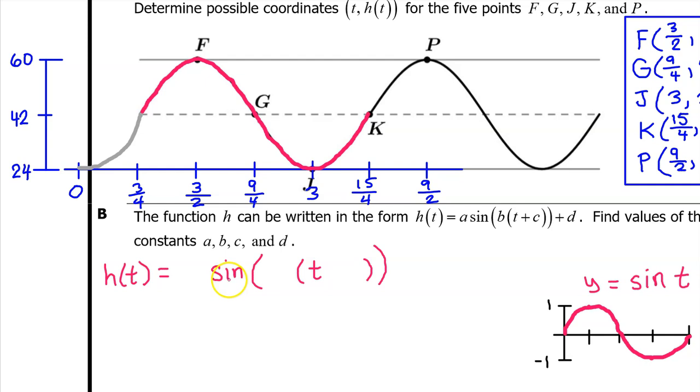Let's build an expression for h of t filling in the values of a, b, c, and d as we go. The a value reflects the amplitude of the graph. It's the distance between the midline and the highest value on the graph. On our graph of h of t, the amplitude is 18, 60 minus 42. So that gives us the a value. In terms of transformations, this is a vertical dilation by a factor of 18 compared to the parent function.